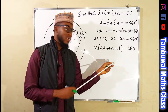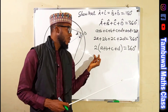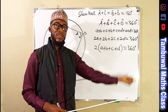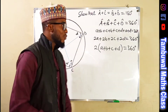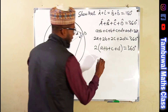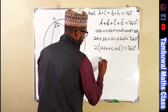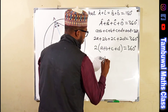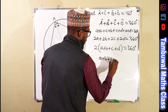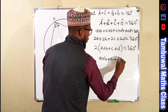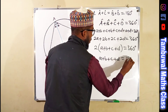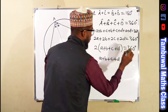We can divide both sides by 2. Two divided by 2 is 1, and 360 degrees divided by 2 is 180 degrees. Therefore, A plus B plus C plus D equals 180 degrees.